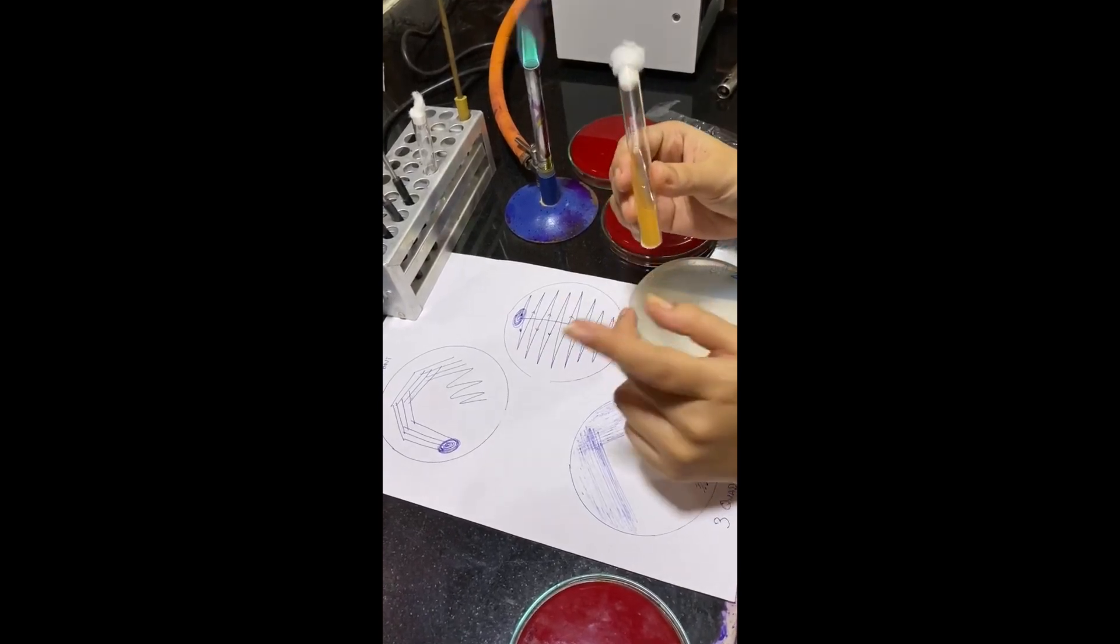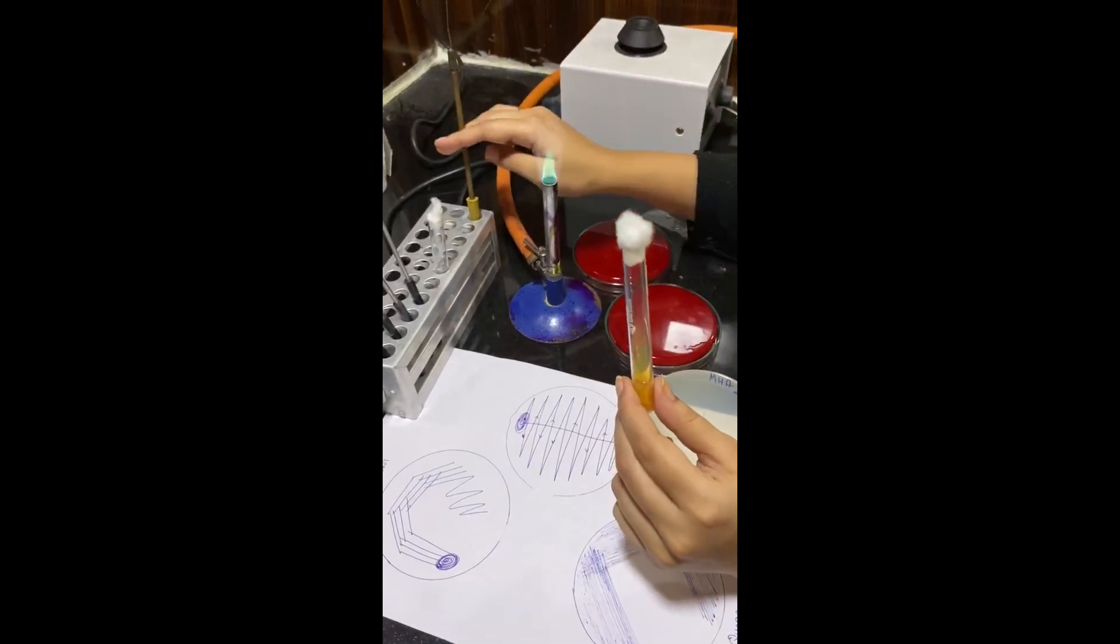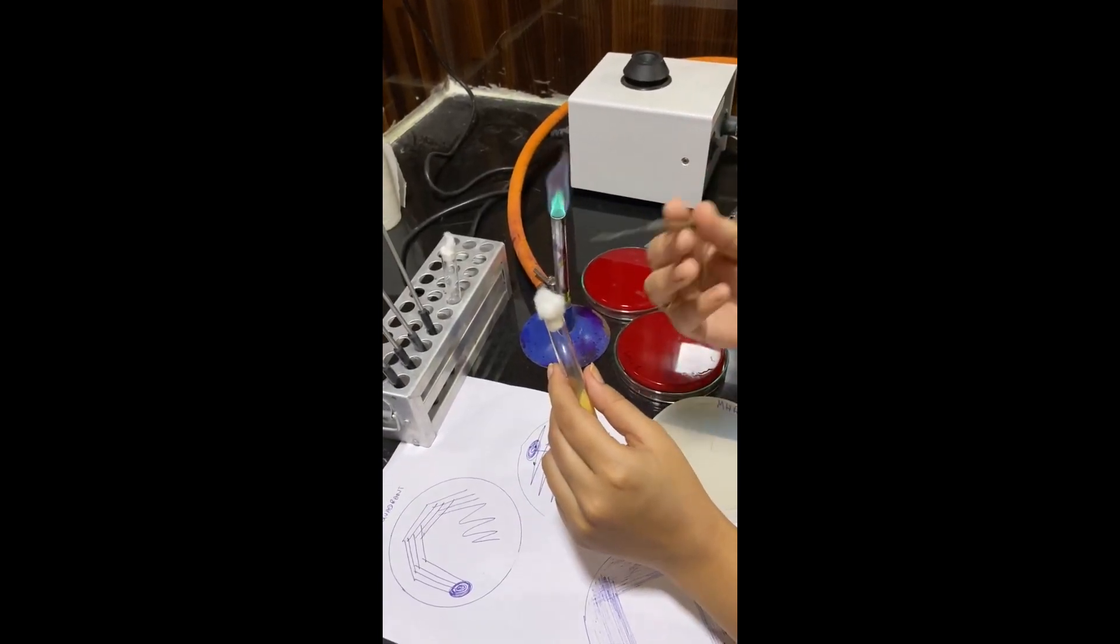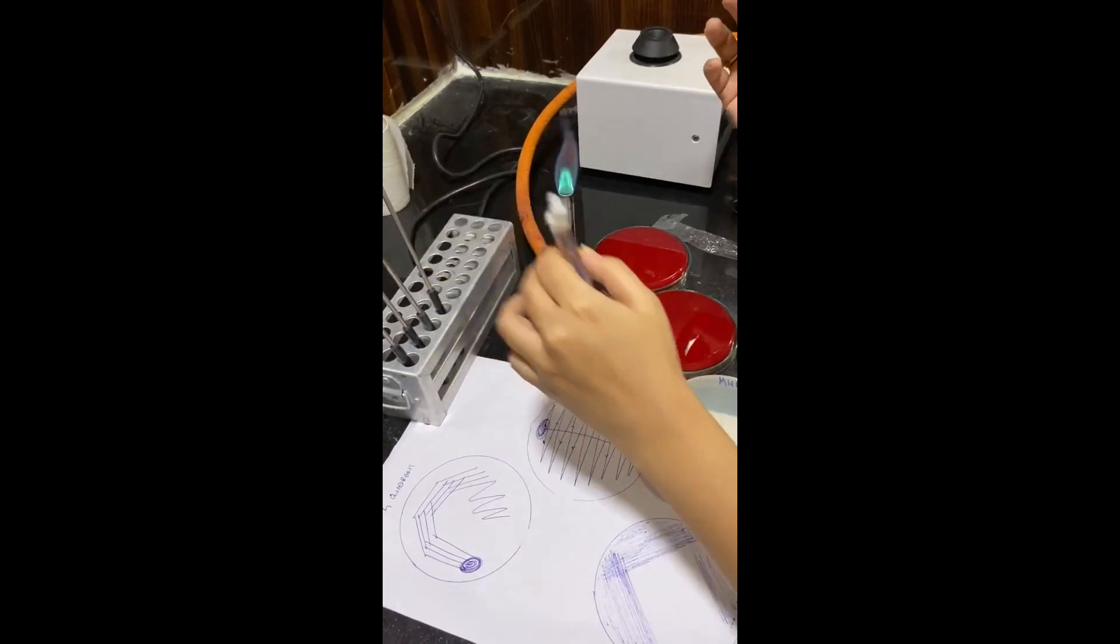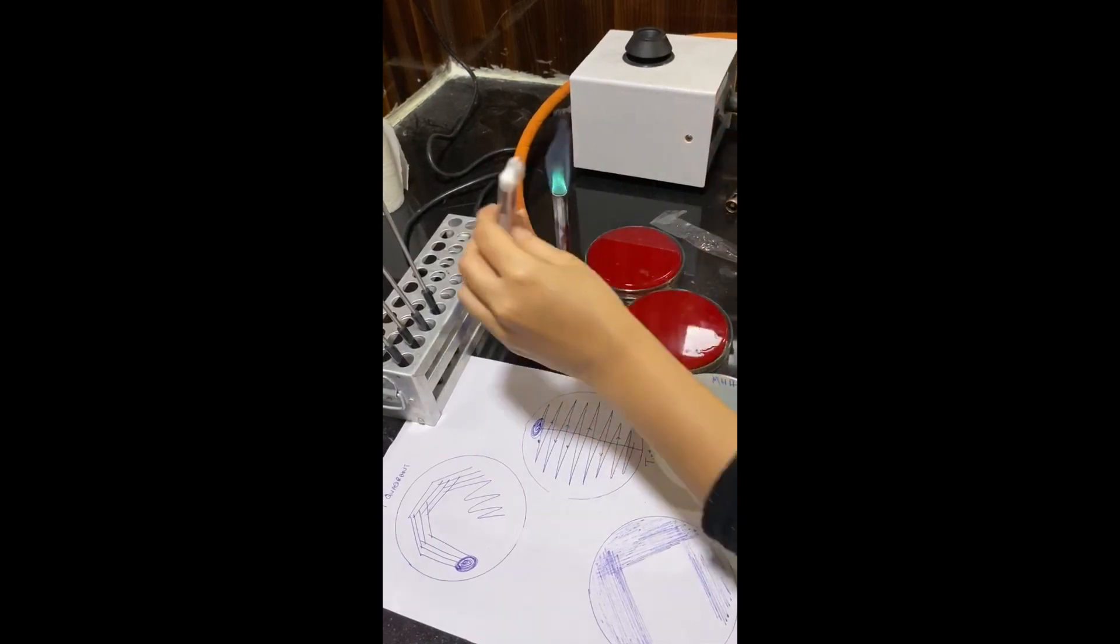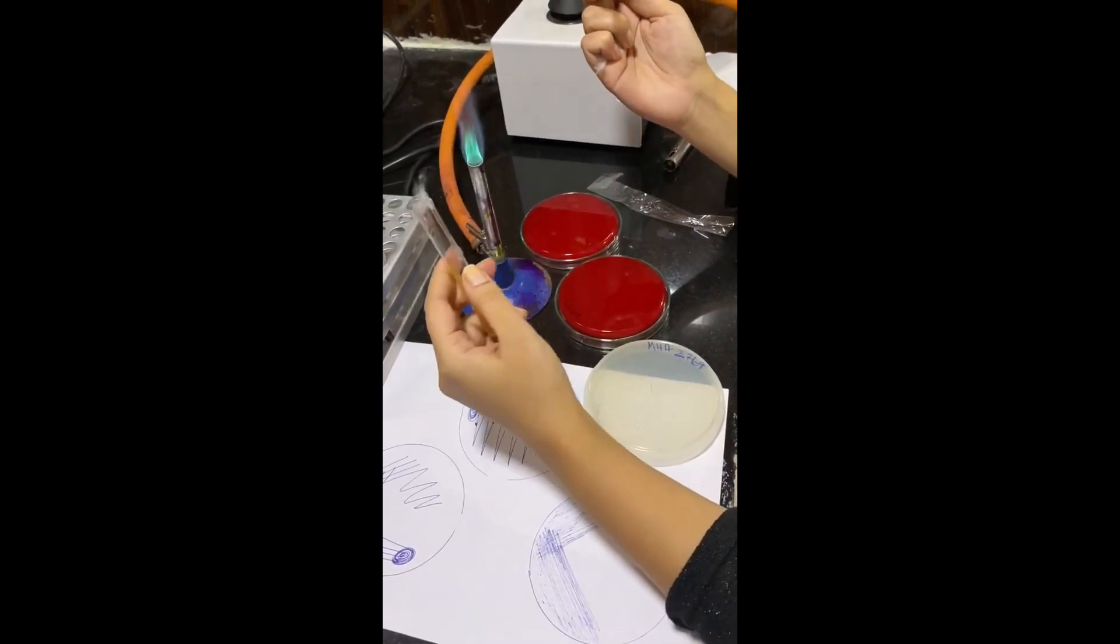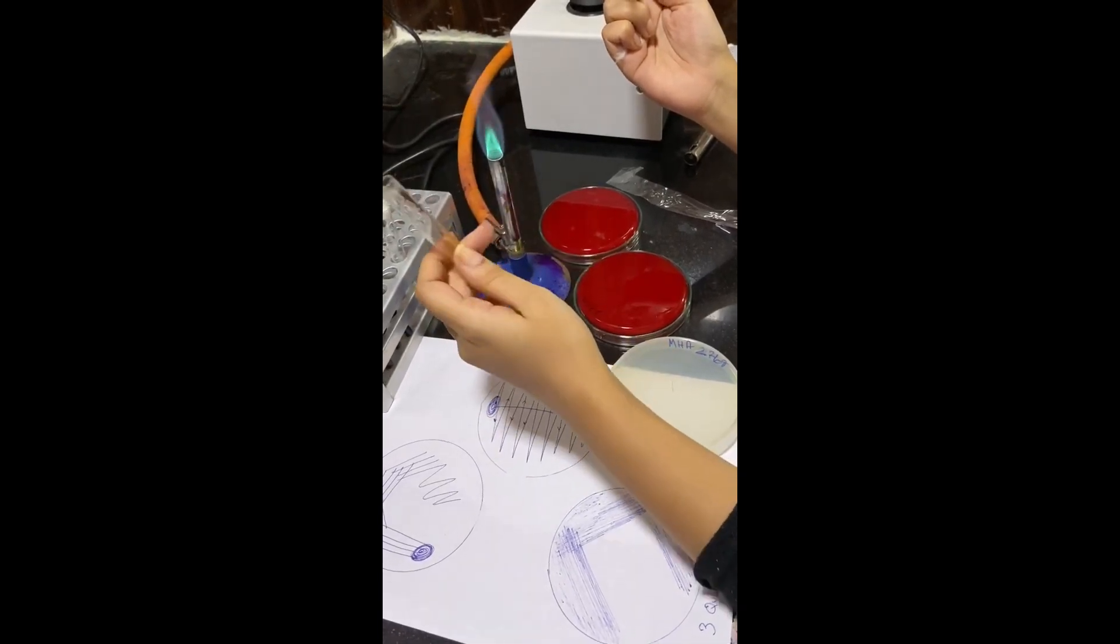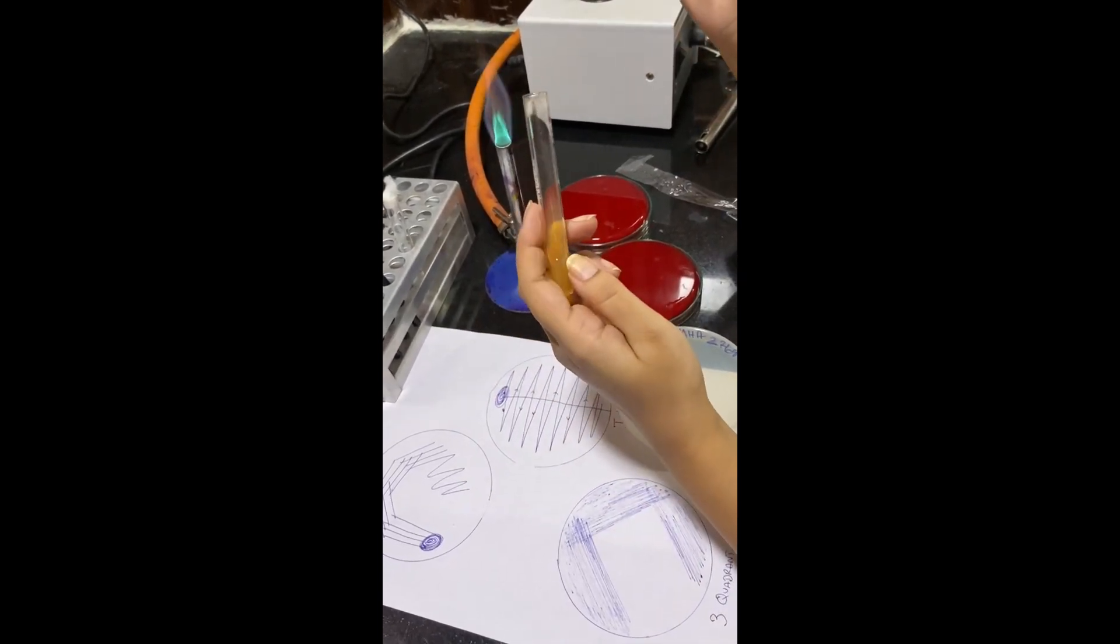The next method I would like to show you: stroke and a stab method. This is a urease medium with a butt and a slant. I already have this straight wire, nichrome wire sterilized. Now for this, you either pick up a colony from a plate or you can just simply... If ever your cotton gets stuck like this, just move it over the flame once. Now, do you see the bottom of the slant? That is the point of inoculation.